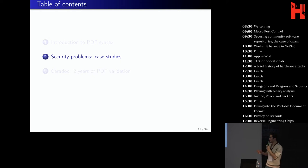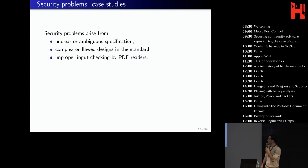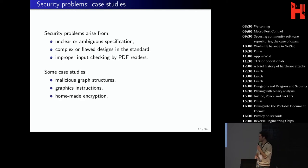PDF seems quite simple, but there is a lot of security problems and I will show some case studies. So, where do security problems come from in PDF? Well, first, the specification is sometimes unclear or ambiguous. There are some designs that are too complex or flawed in the standard. And PDF readers often don't check properly the inputs. So, we will see the following three case studies. First we will talk about malicious graph structures, then the graphics instructions, and then the homemade encryption scheme defined by PDF.